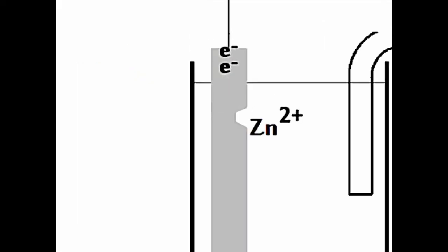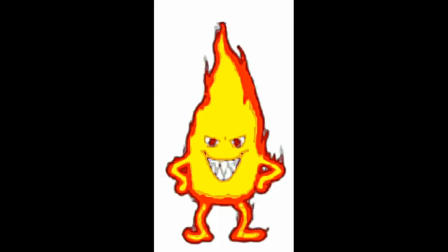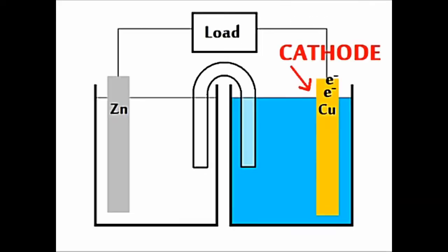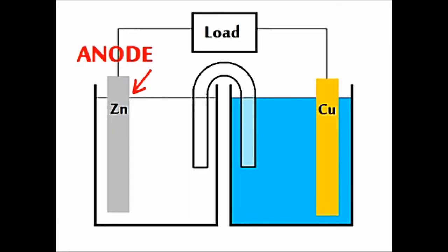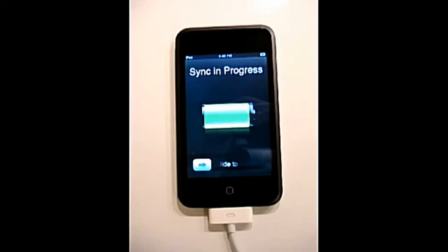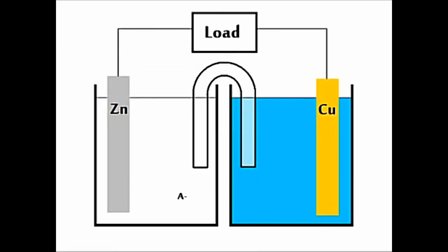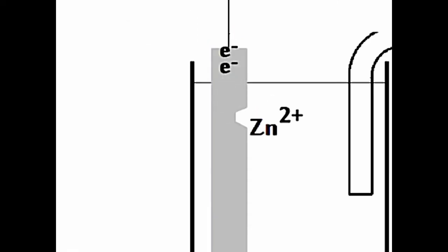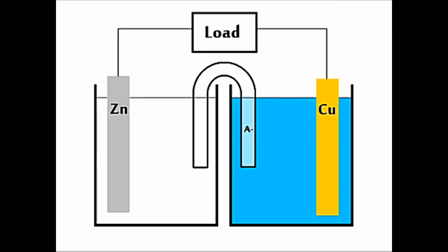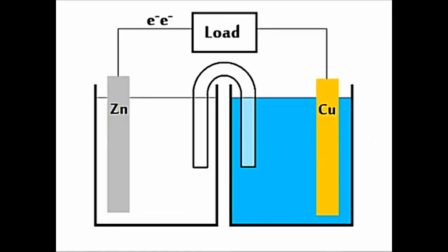We start at the anode. Electrons are lost there and go through the wire and through the load on fire. They enter the cathode and reduce the cations, and the anions go to the salt bridge back to where? Where? We start at the anode. Electrons are lost there and go through the wire and through the load on fire. They enter the cathode and reduce the cations, and the anions go to the salt bridge back to where? Where?